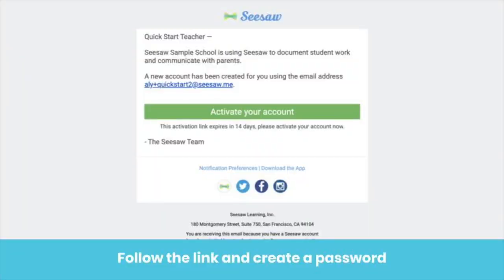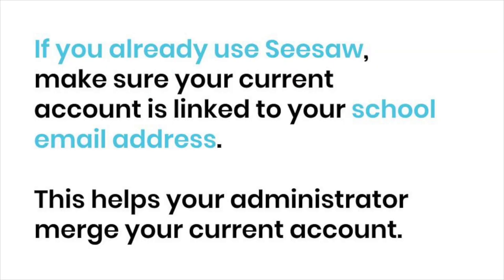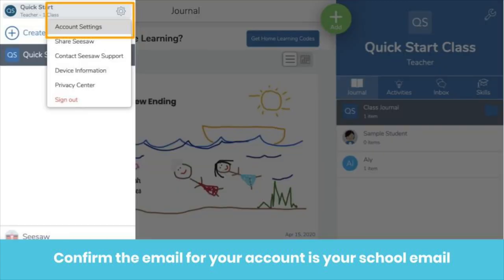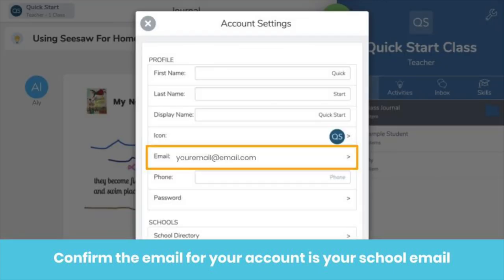The email looks like this. If you already use Seesaw, there's an important detail you need to check. Make sure your current account is linked to your school email address. Doing this makes it so much easier for your administrator to merge your account and make sure that you don't lose any of that amazing student work. To check your email address, click on the profile icon on the top left of your screen. Click the gear, then click Account Settings. You'll be able to see the email address associated with your account here.